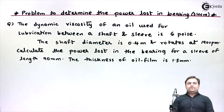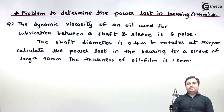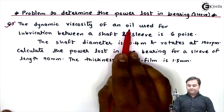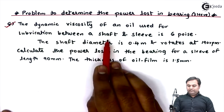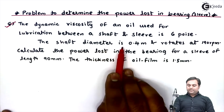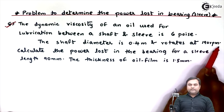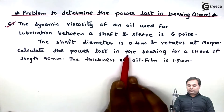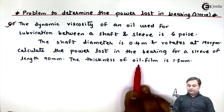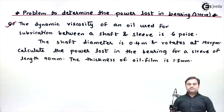Hello friends, in this video we will see a problem in which we have to calculate power lost in the bearing, which is also called a sleeve. The dynamic viscosity of an oil used for lubrication between a shaft and sleeve is 6 poise. The shaft diameter is 0.4 meter and rotates at 190 rpm. Calculate the power lost in the bearing for a sleeve of length 90 mm. The thickness of the oil film is 1.5 mm.